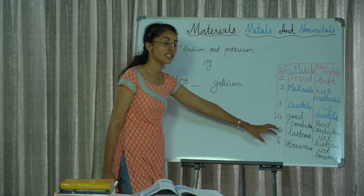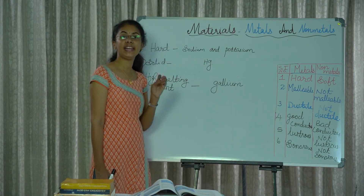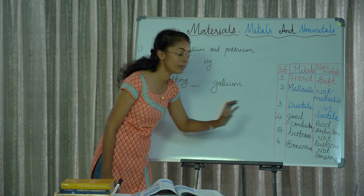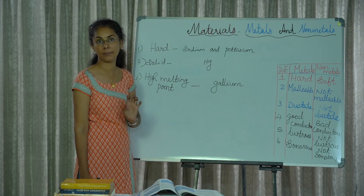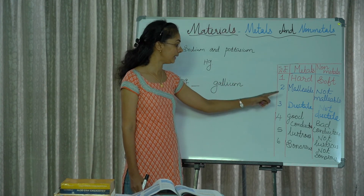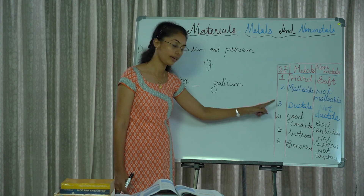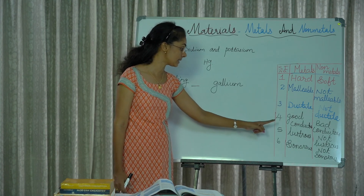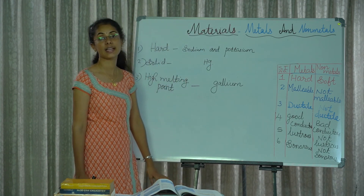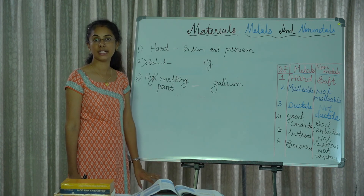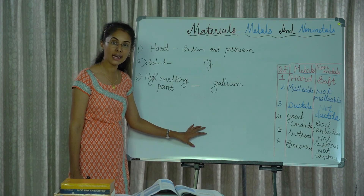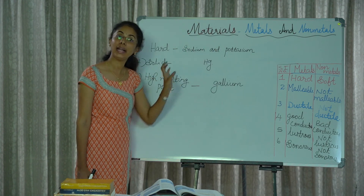Lustrous means shiny appearance — metals show a lustrous, shiny appearance. To summarize the physical properties of metals: hard, malleable, ductile, good conductors of heat and electricity, lustrous, and sonorous — these are the physical properties of metals and non-metals, with a few exceptions.